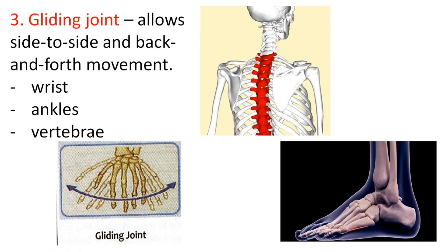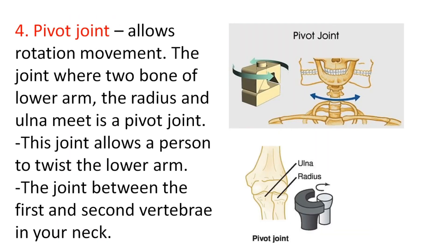The gliding joint allows side-to-side and back-and-forth movement. Examples of gliding joints are the joints in the wrist, ankles, and vertebrae. The pivot joint allows rotation movement. The joint where the two bones of the lower arm — the radius and ulna — meet is a pivot joint. This joint allows a person to twist the lower arm. Another example is the joint between the first and second vertebrae in the neck.